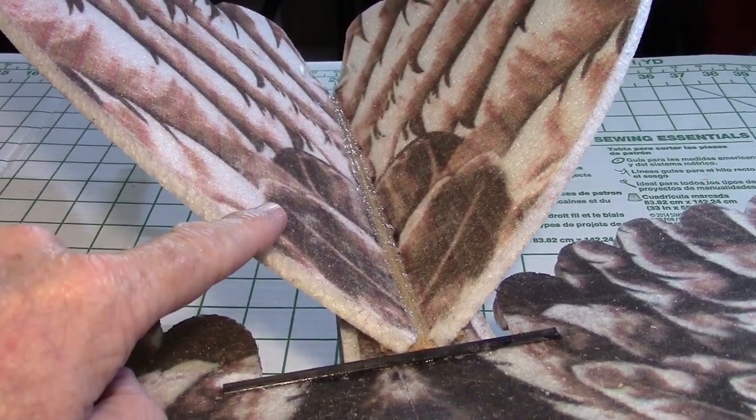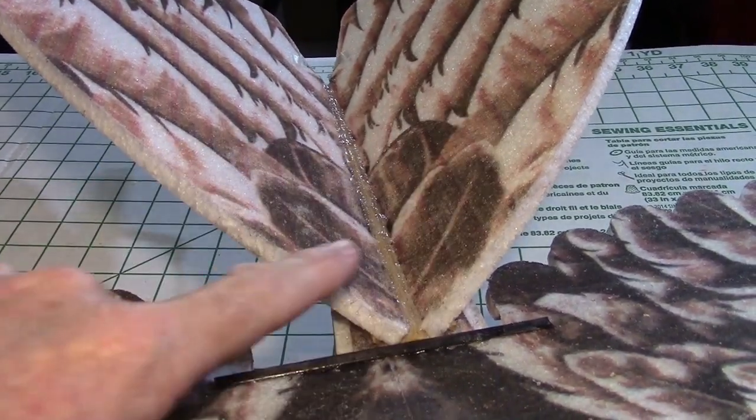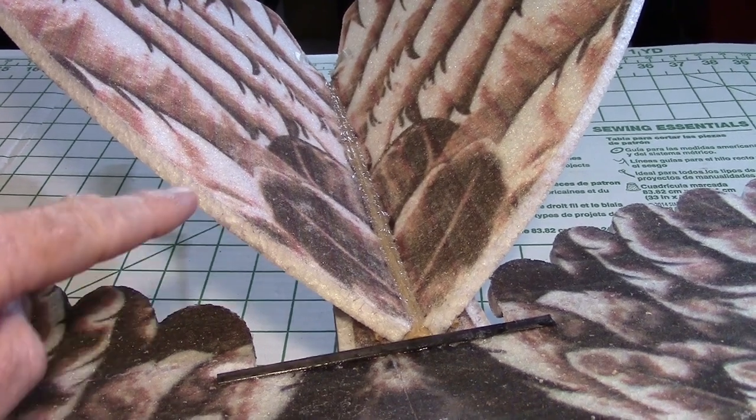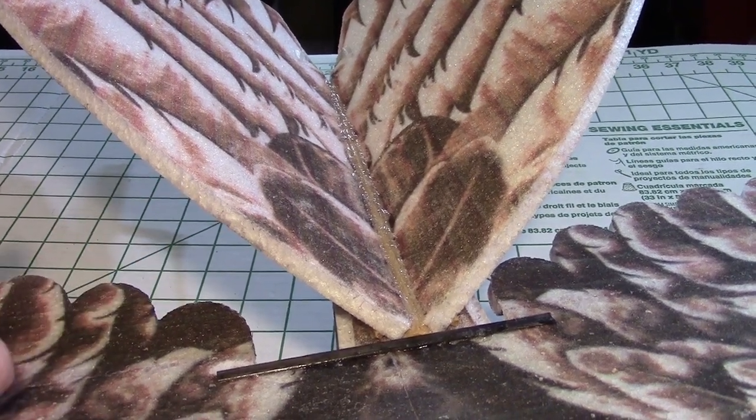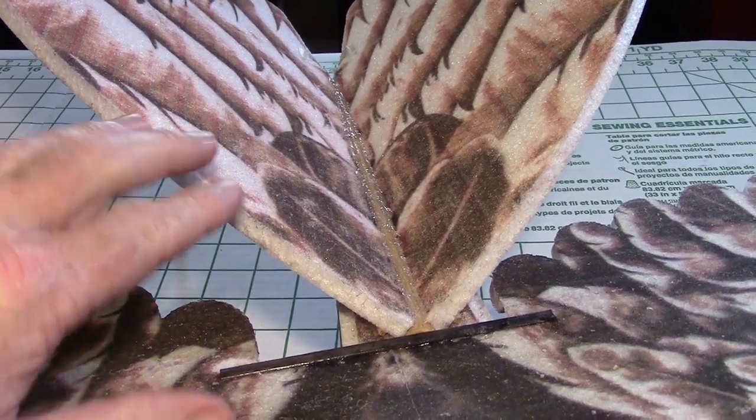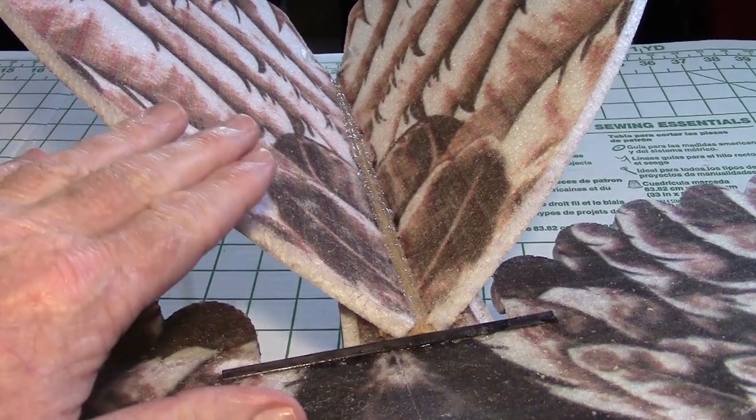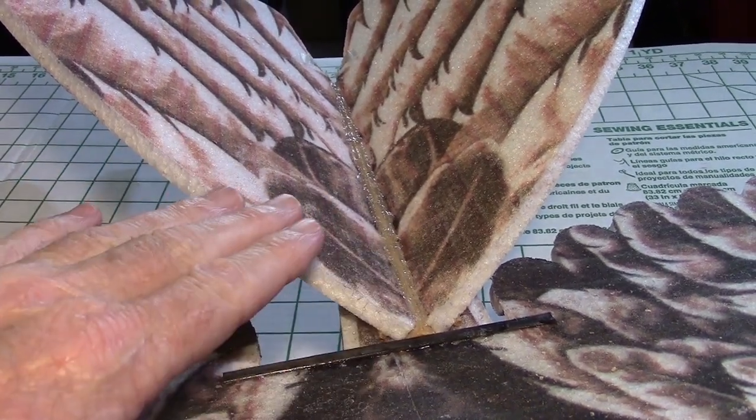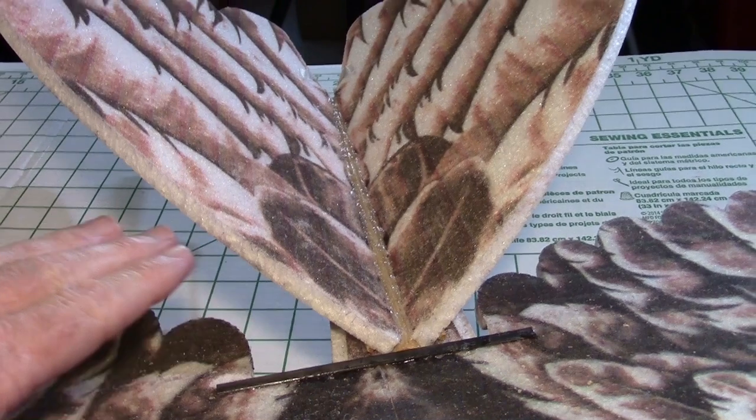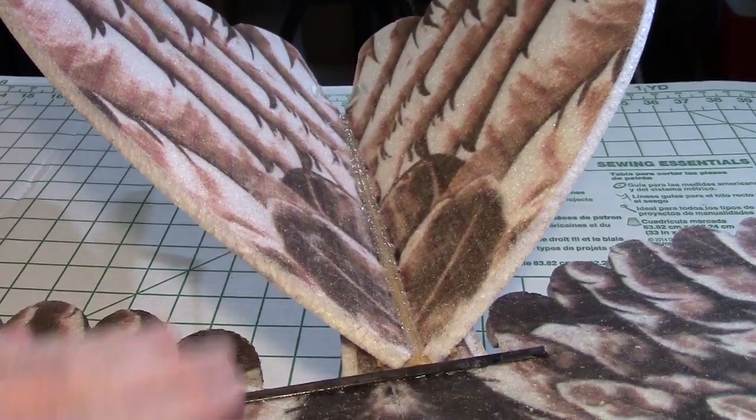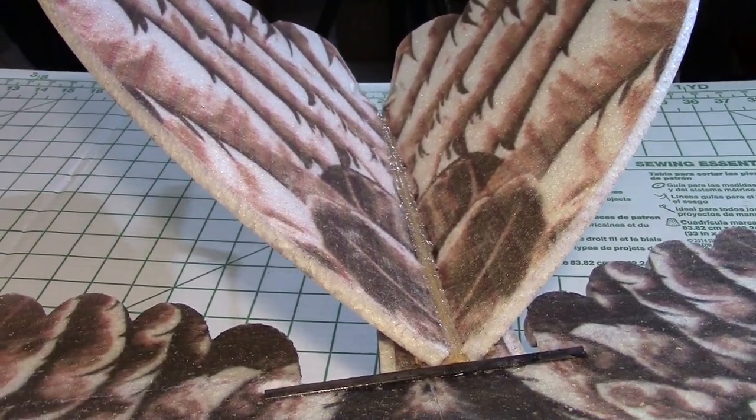Also I think having the V-tail at a 120 degrees angle, instead of 90 degrees like the manual has, is actually a help. Because it seems to have more authority with the elevator than it would if it was on 90 degrees. And it does give it more of a bird look. So yeah, I'm happy with that change too.